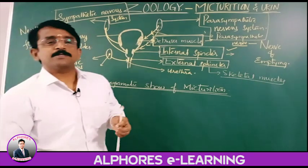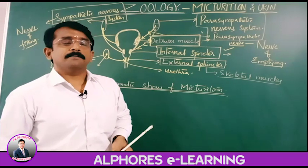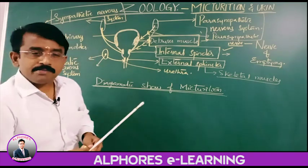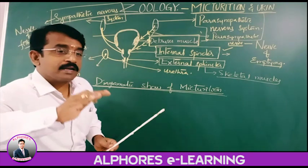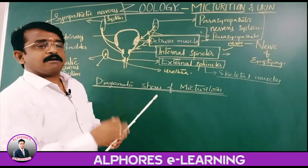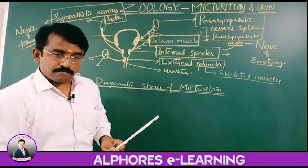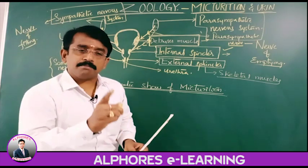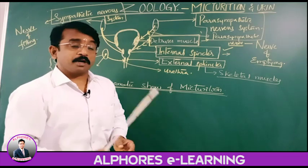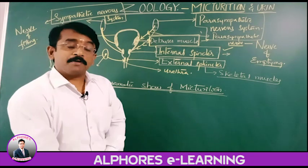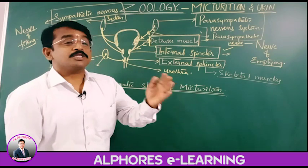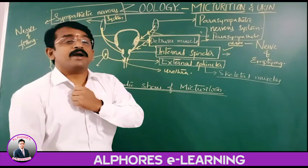The peripheral nervous system is divided into two types: the somatic nervous system and the autonomic nervous system. The central nervous system includes brain and spinal cord; the peripheral nervous system includes the autonomic nervous system as well as the somatic nervous system.